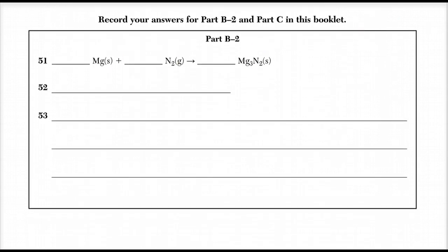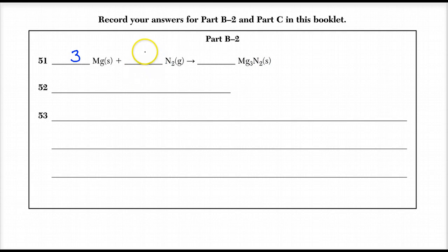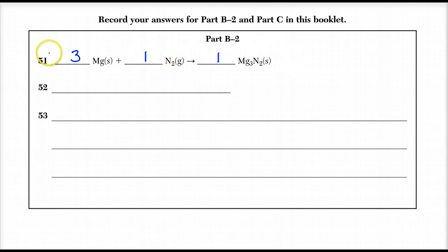Here's our reaction. I have one magnesium on the left and three on the right, so I put a three in front. Remember, I can't change the chemical formulas — just put coefficients in front. I already have two on the other side, so nothing in front of the N₂ means one. Nothing in front implies one. So it is balanced. That was question 51.